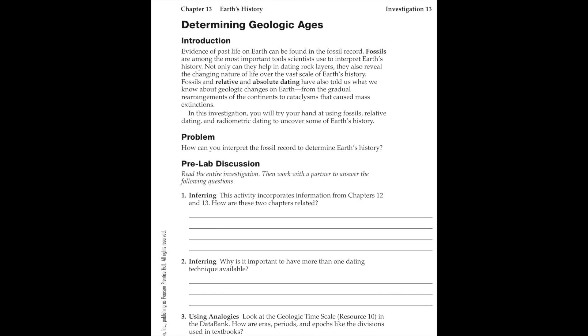Evidence of past life on Earth can be found in the fossil record. Fossils are among the most important tools scientists use to interpret Earth's history. Not only can they help in dating rock layers, they also reveal the changing nature of life over the vast scale of Earth's history. Fossil and relative and absolute dating have also told us about geological changes on Earth, from the gradual rearrangements of the continents to cataclysms that caused mass extinctions.